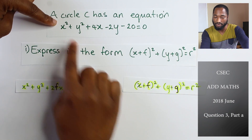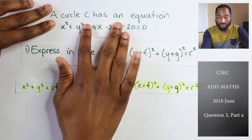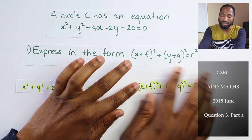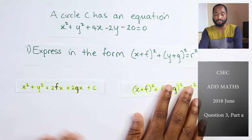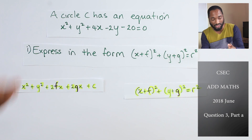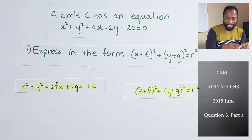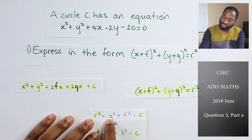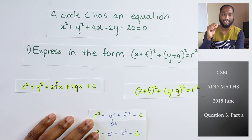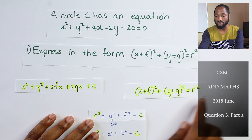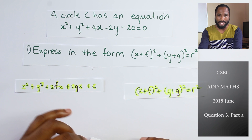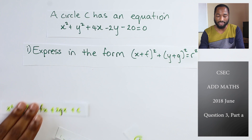Basically, we want to go from this way of expressing the equation to the other way. This is a factorized version of the expanded form. The question is asking us to go from the expanded form to the standard form, which is much more useful. There are two main methods to do this. You can basically factorize — completing the square — or you can compare coefficients, knowing that r squared equals g squared plus f squared minus c. That's method two.